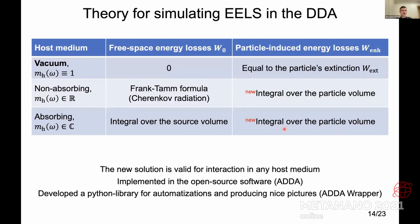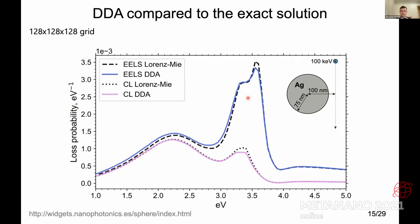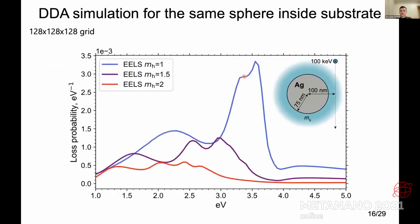This works even for absorbing media or in the case of Cherenkov radiation. For particles in vacuum, we have the Lorenz-Mie theory to compare against, and the dashed and dotted Lorenz-Mie lines agree well with our simulated results for a silver nanosphere — the blue line is EELS and the pink line is CL. Regarding substrate effects: the blue line is the particle in vacuum, the magenta line is the same particle in glass with refractive index 1.5, and the red line is in a medium with refractive index 2, which is already the Cherenkov radiation case since the electron moves faster than light in that medium.